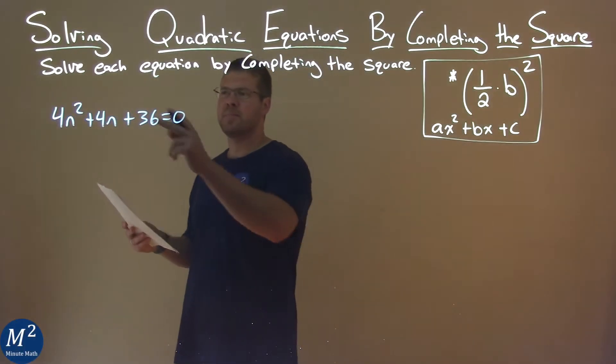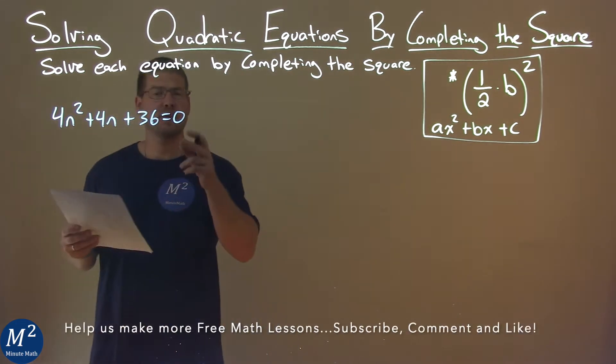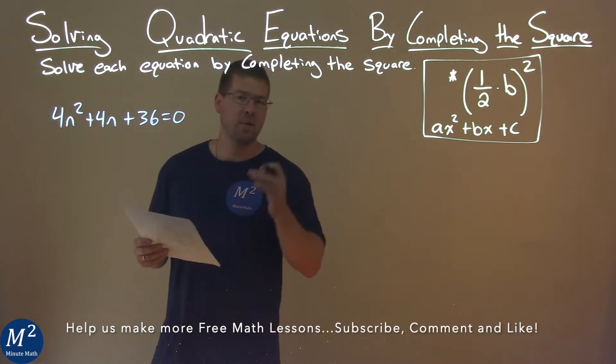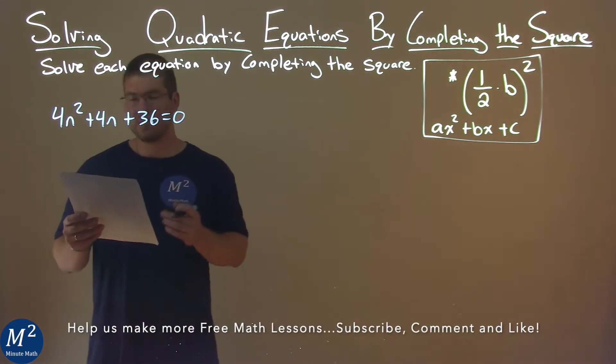We're given this problem right here: 4n squared plus 4n plus 36 equals 0. And we need to solve this by completing the square.